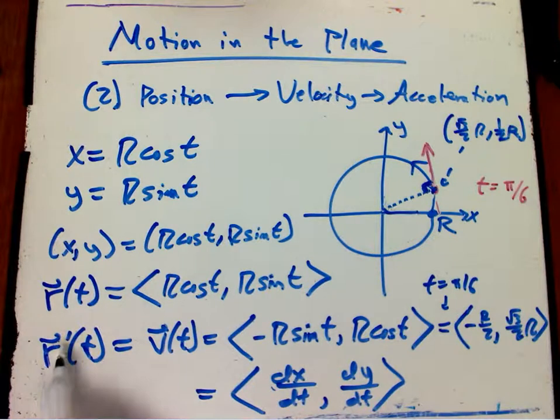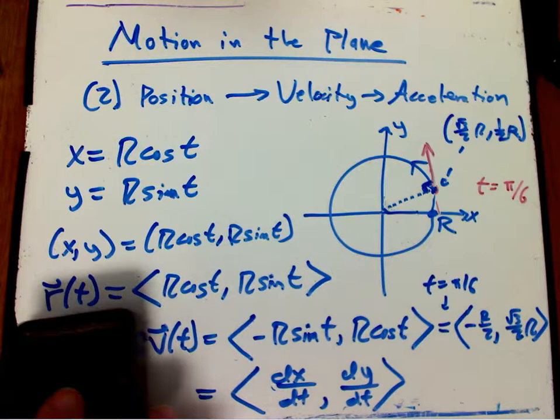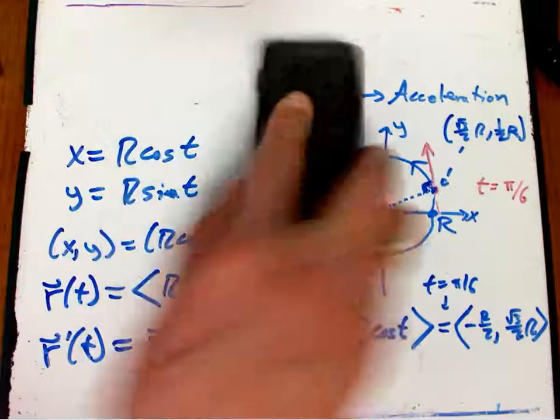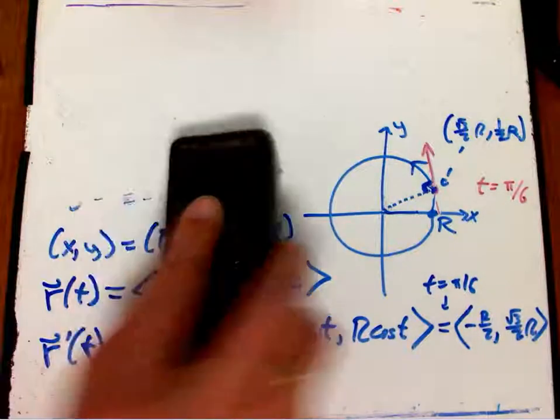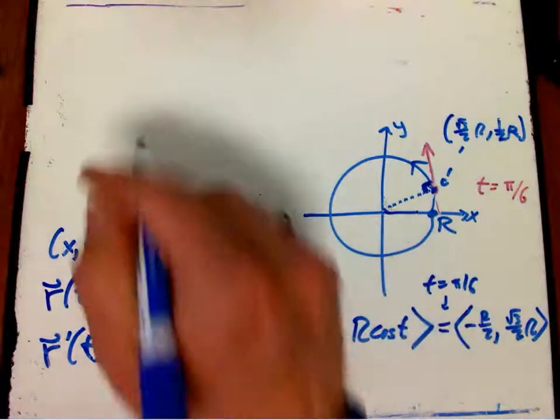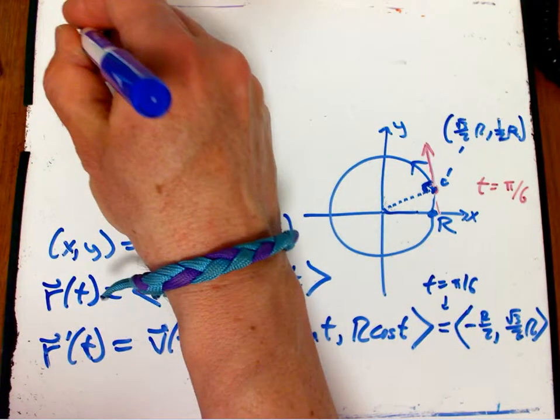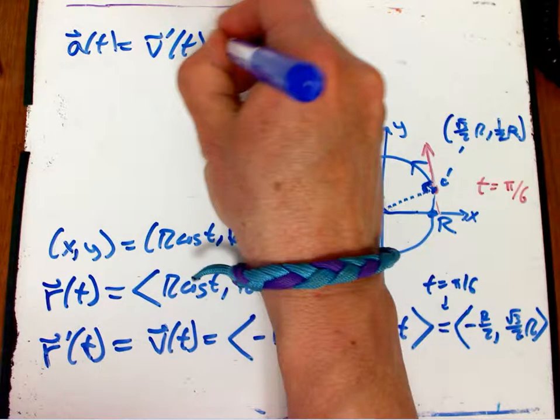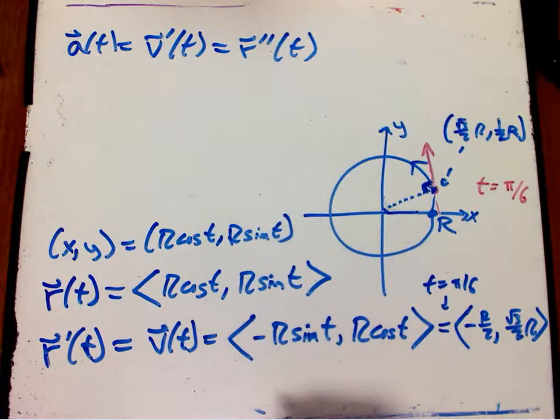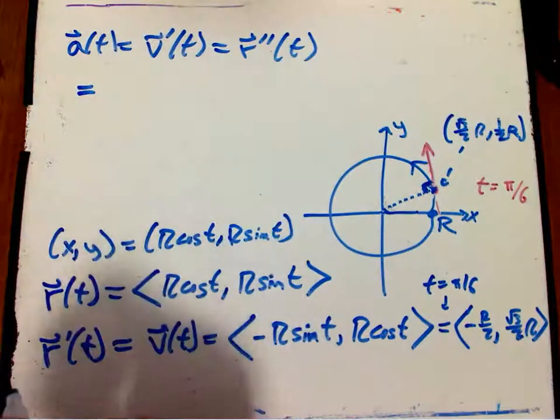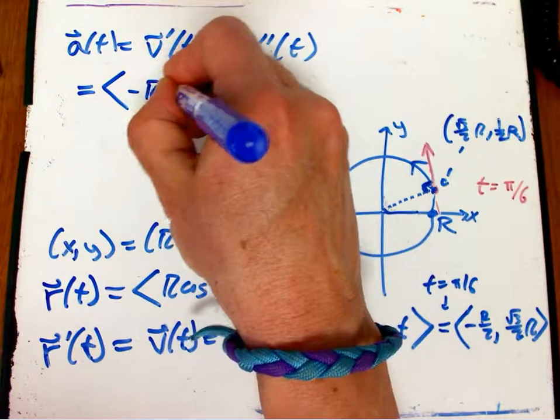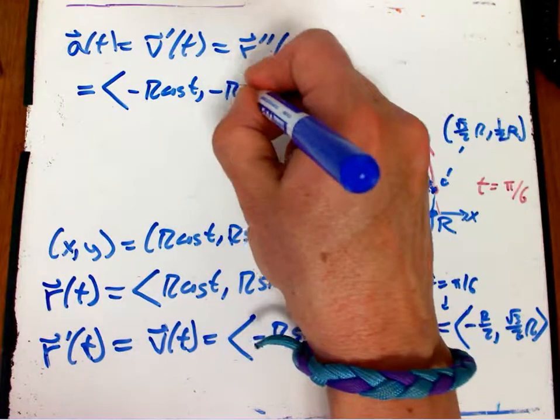So, what's the next thing we might want to do after taking the velocity? We might want to take the acceleration. The acceleration is just the derivative of velocity or the second derivative of the position vector. And that's going to be, in general, it's going to be minus r cosine t minus r sine t.